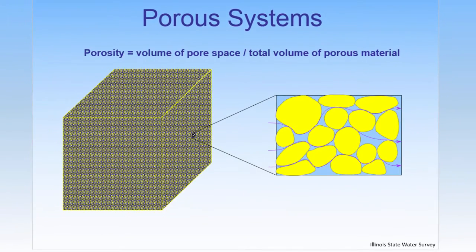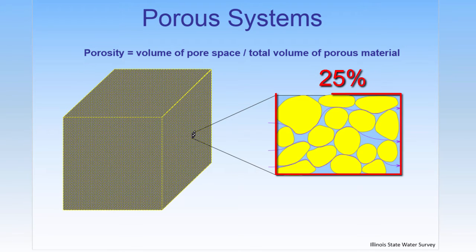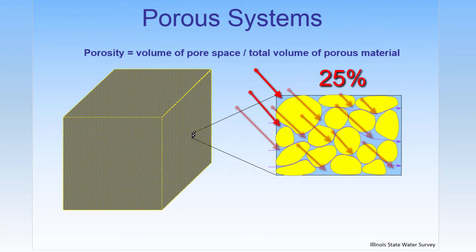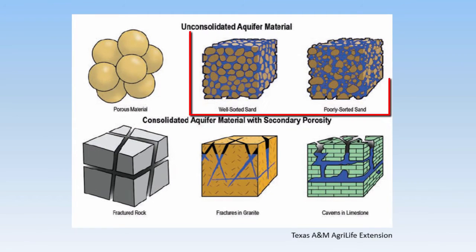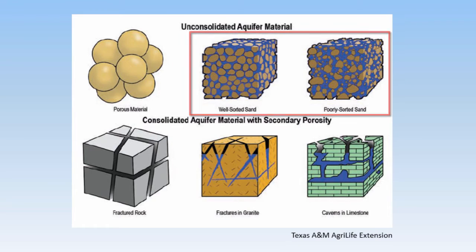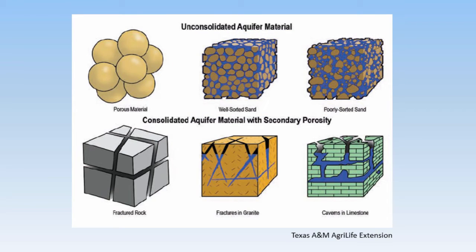Porosity is a measure of the relative volume of pore space per unit volume of geologic unit. So an aquifer with a porosity of 25% means that 25% of the total space it occupies is void space, full of water. Porosity can vary. For example, a sand and gravel aquifer can have a porosity of 20 to 30%. Even clay, which is an aquitard, can have high porosity, upwards of 50%.